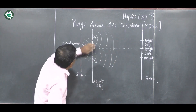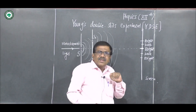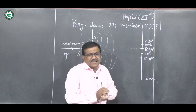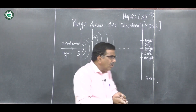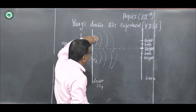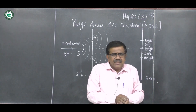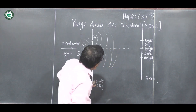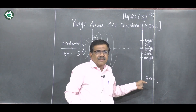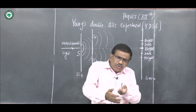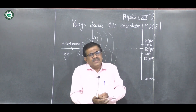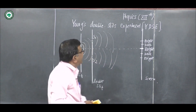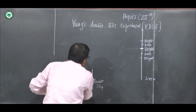If either S1 or S2 is covered, then the fringes disappear — there is no interference pattern. Now we see the path difference between the waves reaching the screen, and by using that path difference, we conclude whether a point is bright or dark.